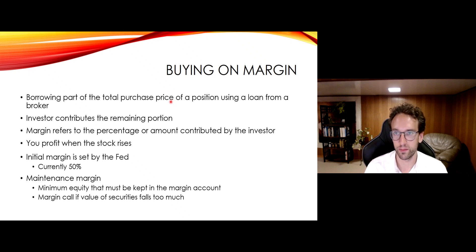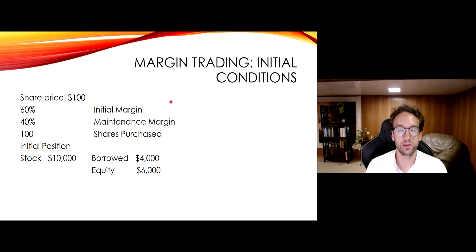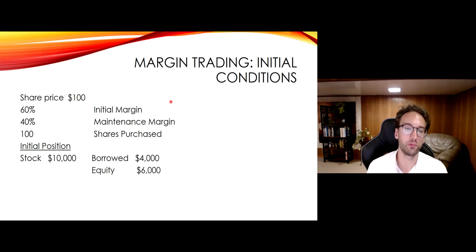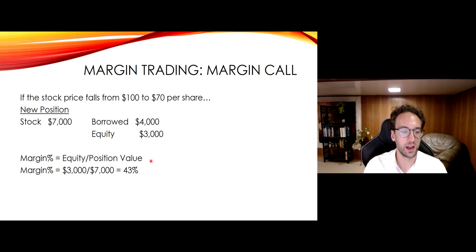And that is called a margin call. Let's look at an example — I think putting numbers to things helps people a lot. In this case, you have $6,000 of equity, and you decide to buy 100 shares of a $100 stock, so you're spending $10,000. Because you only have $6,000 of equity, you have to borrow $4,000 from your broker. So your initial margin here is 60%. Your margin is always your equity divided by the position value. This is an important equation to remember: your margin percentage is the equity you have divided by the position value you have.